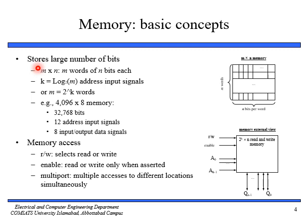We require log base 2 of M address input lines to access memory. These address input signals identify a particular word. For example, if we have a memory with M=4096 words and N=8 bits, we get 32,768 total bits by multiplying those two. We require 12 address input signals because log base 2 of 4096 equals 12.